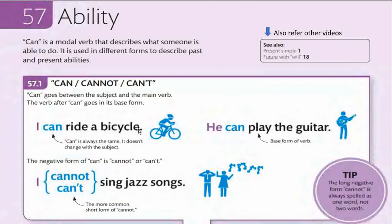'Can' is always the same — it doesn't change with the subject. That means no -s is added to it and no other inflections are added to the modal. The modal remains as such, and the verb remains in the base form without any inflections. These two pointers should be taken down when constructing sentences using 'can.'